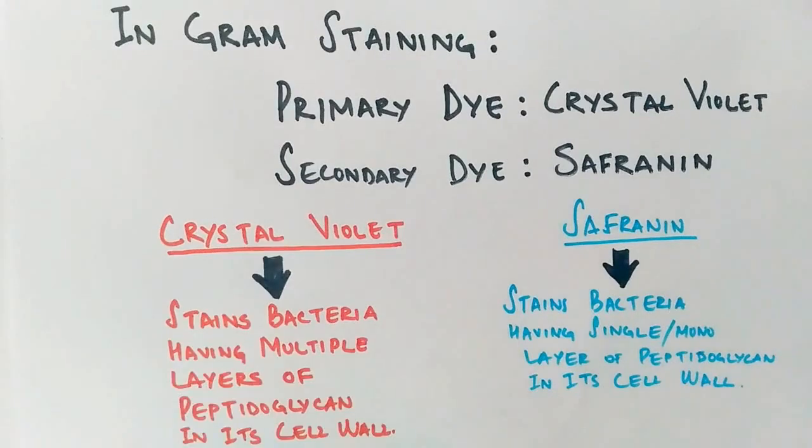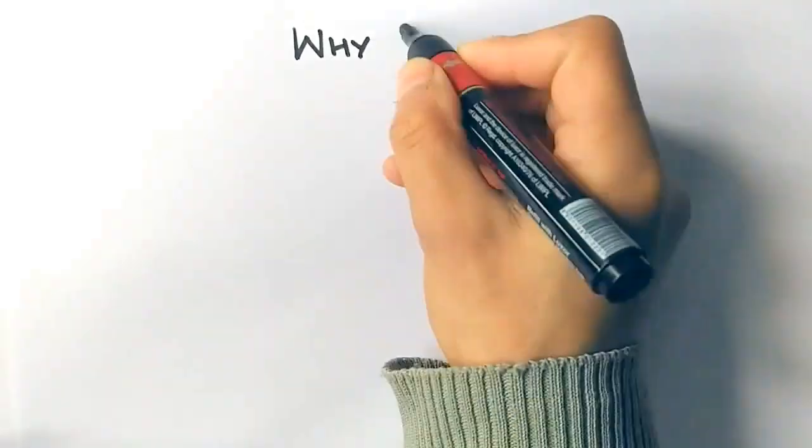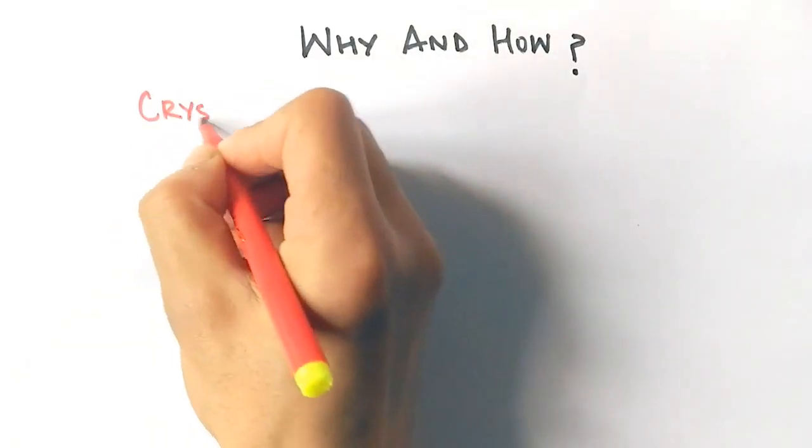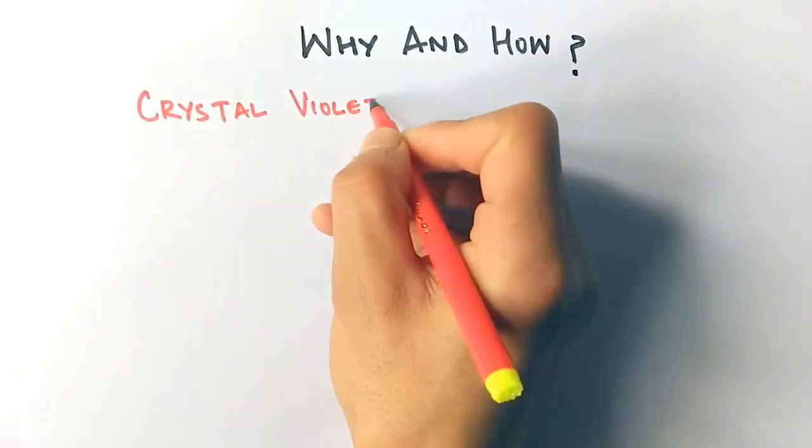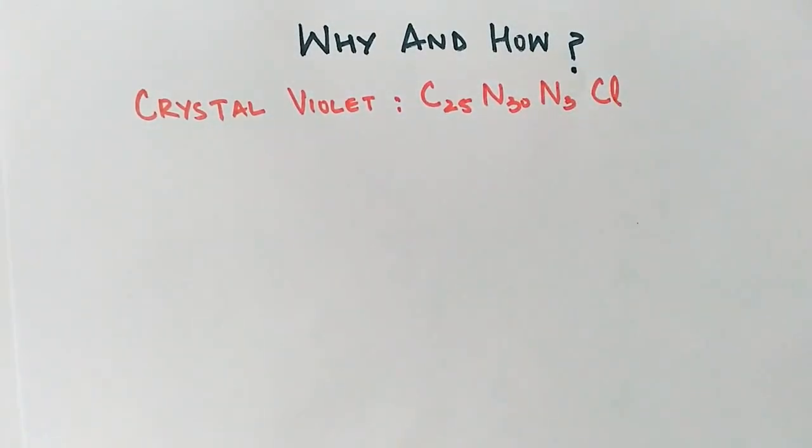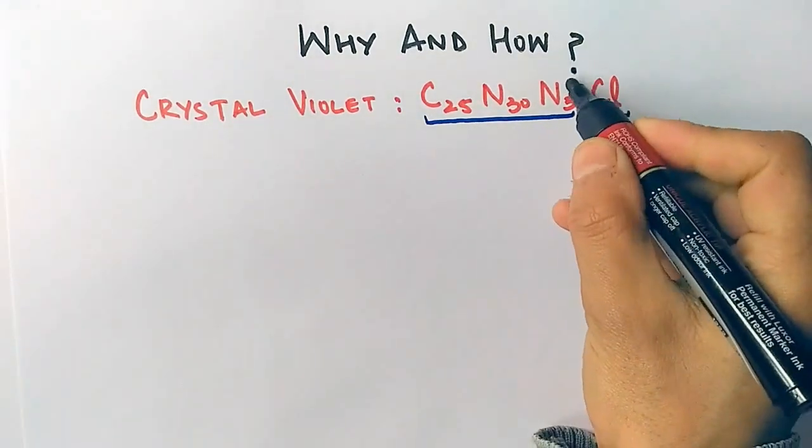Now we will see why and how this occurs. Crystal violet has the property of dissociation in aqueous solution. Looking at the structure of crystal violet, C25H30N3Cl, it gets dissociated into CV positive and Cl negative.